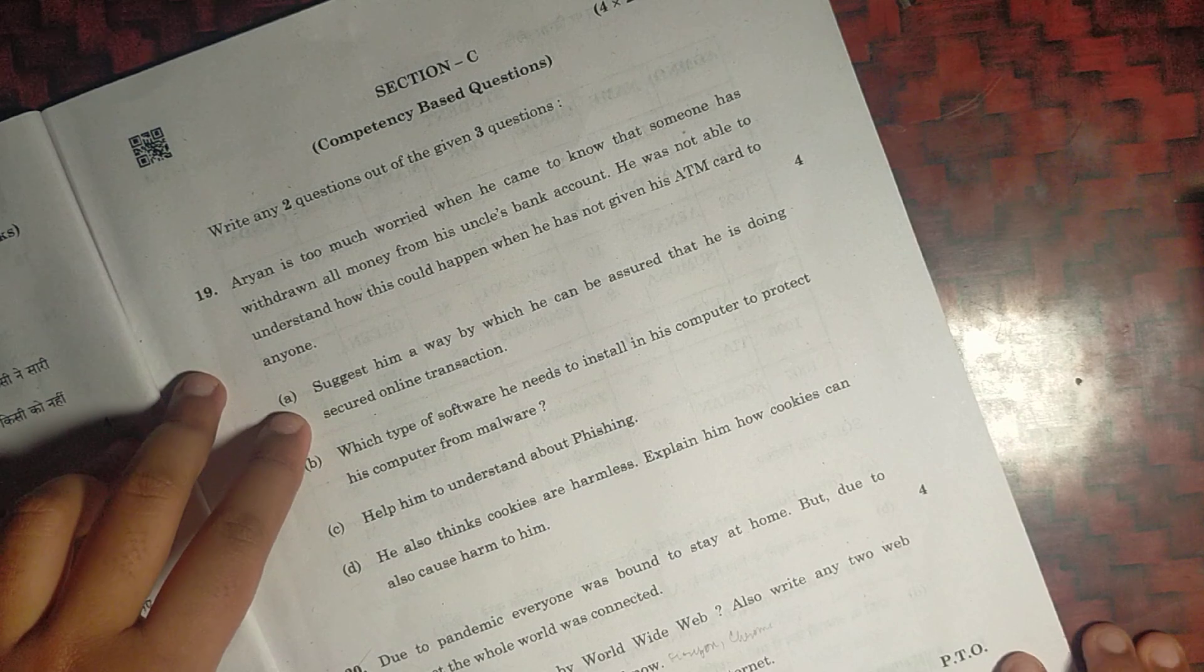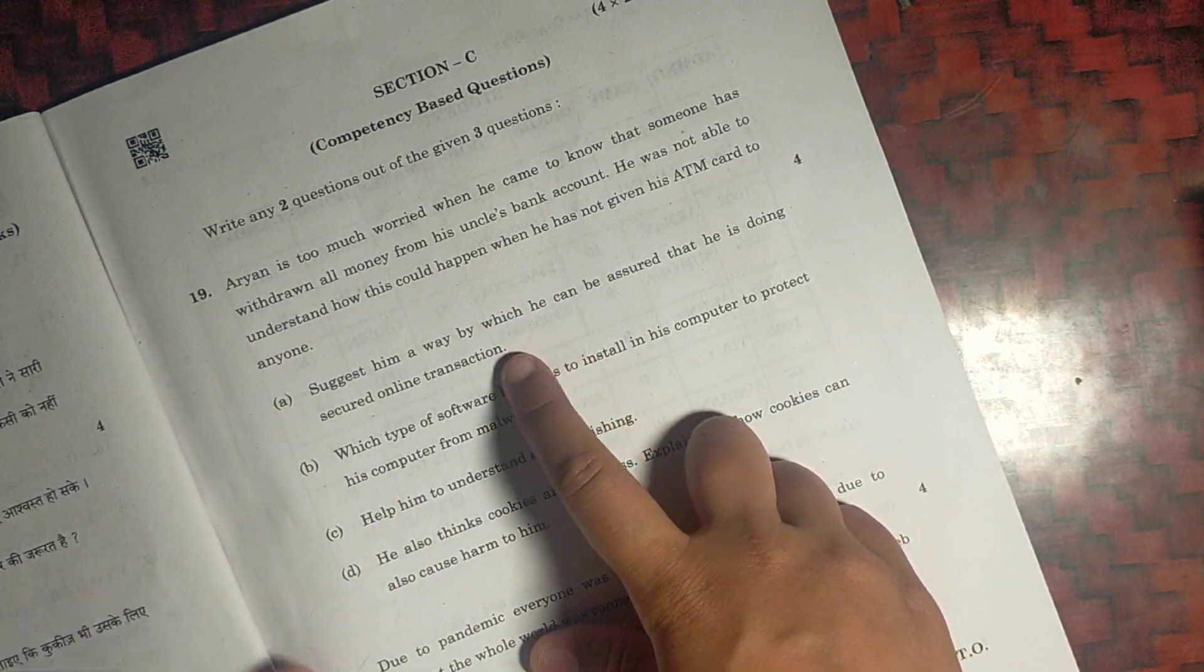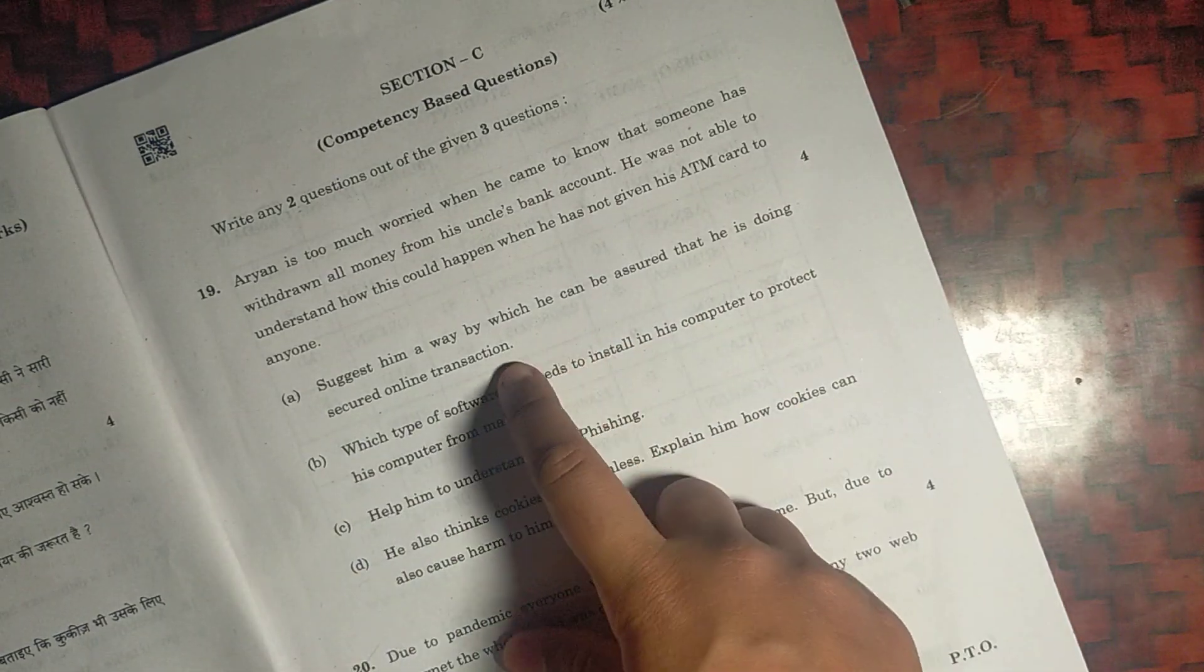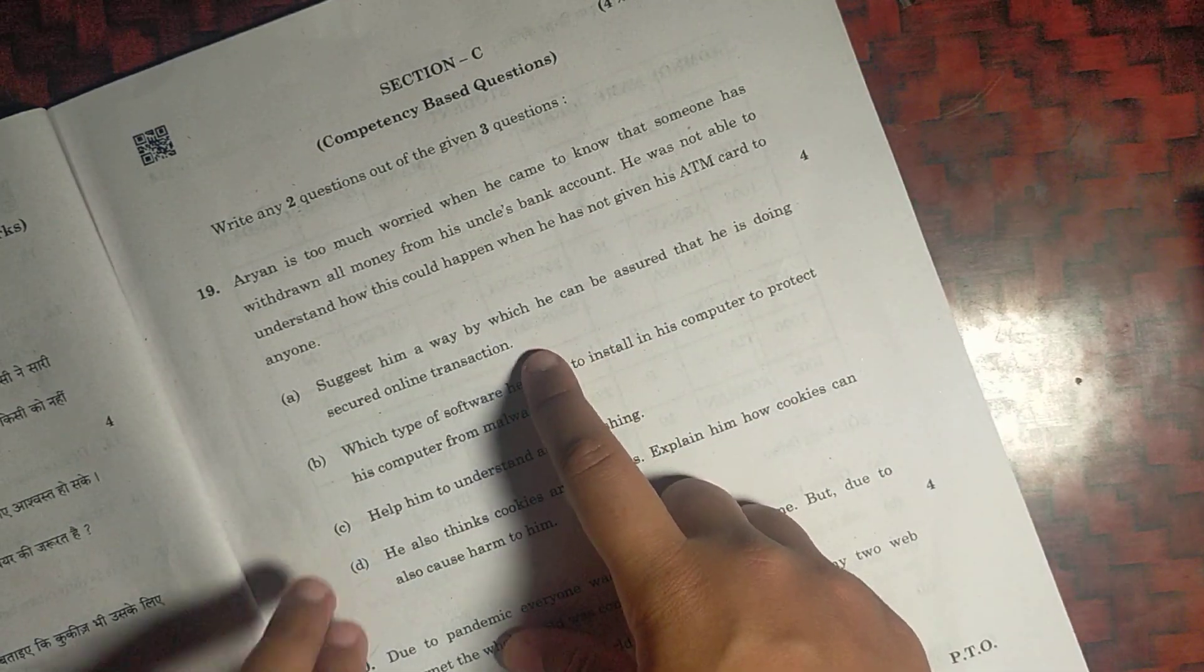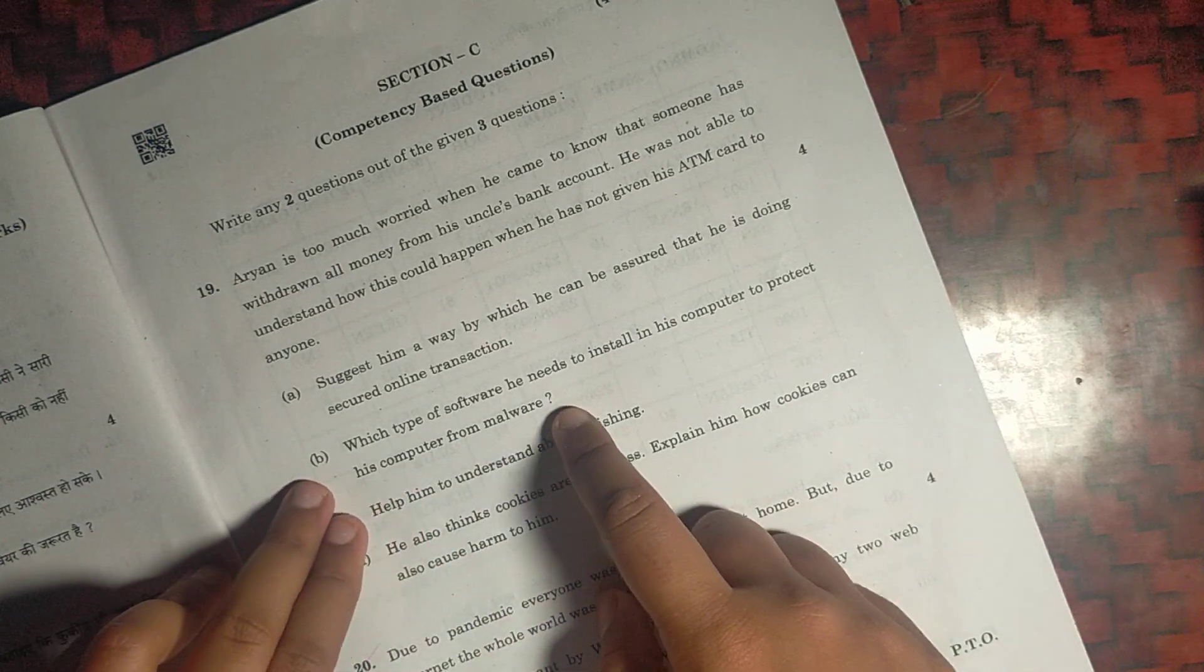For nineteenth question, A will be seeing that there is a lock symbol that tells us that the transaction we are doing is secure and the site is secure. And B, the software is antivirus.